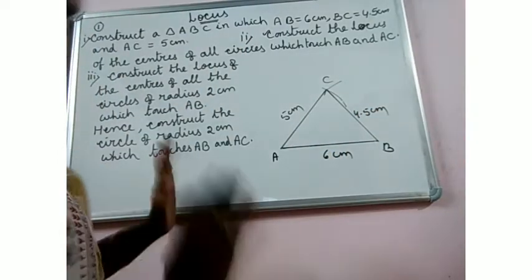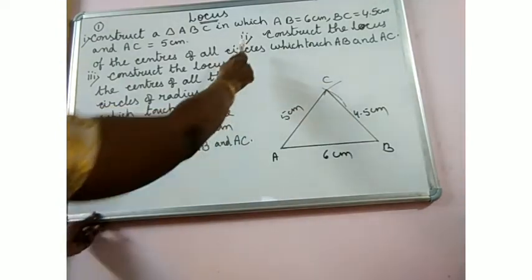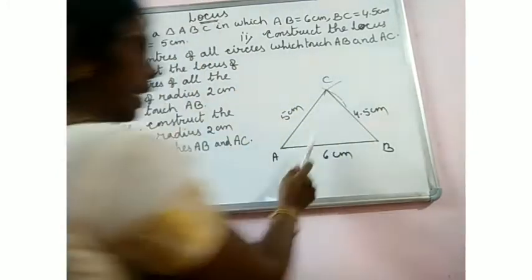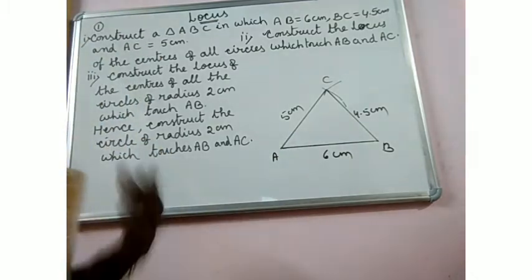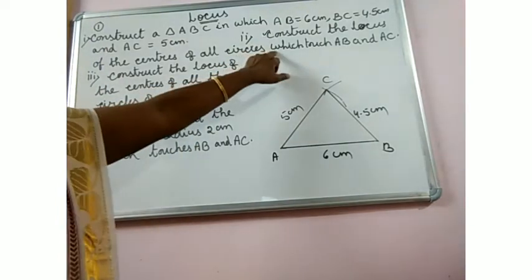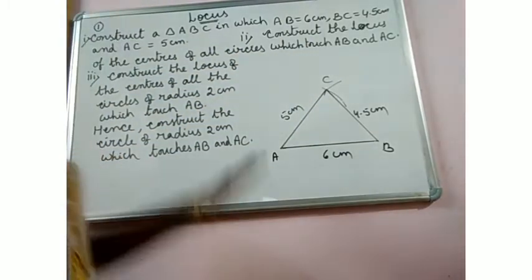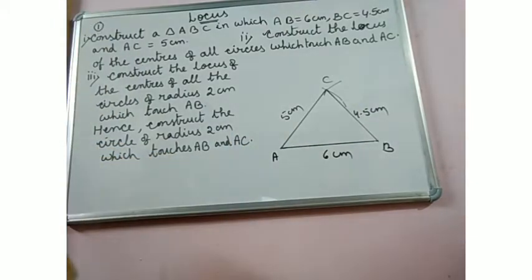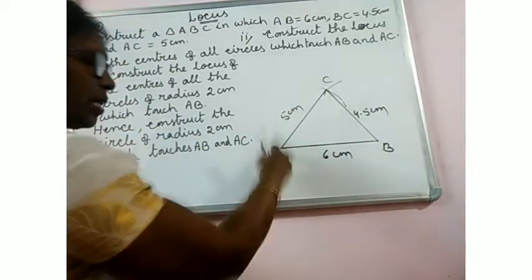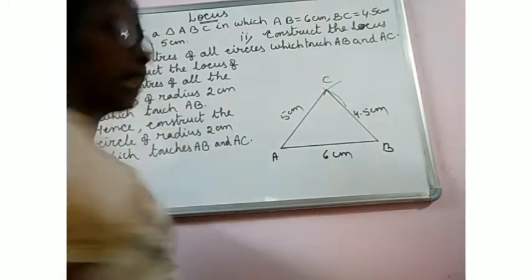Exact construction I am not doing but I will give you a rough idea. The first part, construction of the triangle, is done. For the second part: construct the locus of the centers of all circles which touch AB and AC.